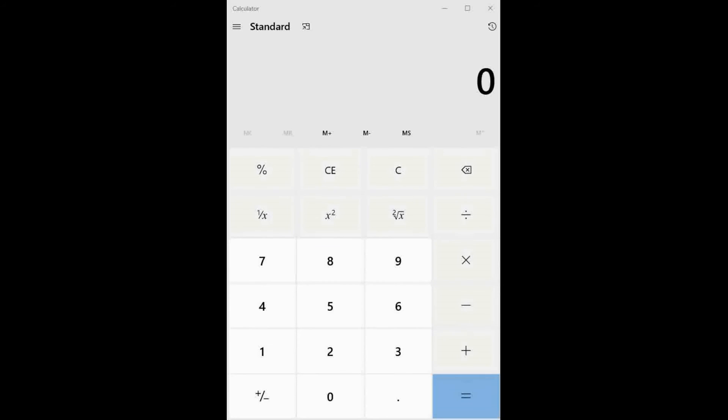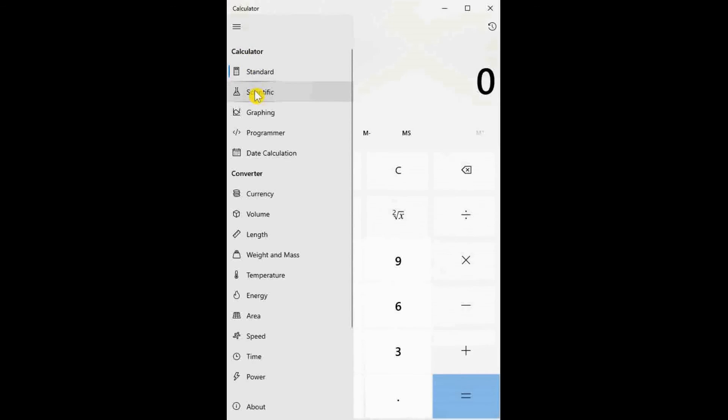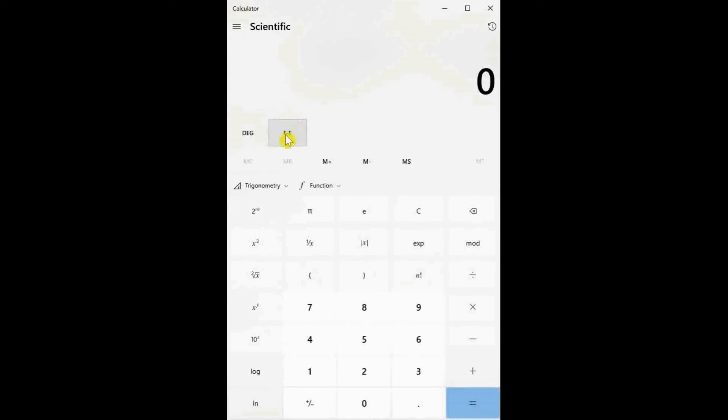The calculator built into Windows is pretty straightforward. We just need to remember to enter the argument first, and then the function. Make sure you're using the scientific version of the calculator. Set radian mode with this button. To find arctan of 2, enter the argument 2 first, and then the trig dropdown. Click the second button. This will turn all the trig functions into inverse trig functions. So click inverse tangent, and we get 1.107 radians again.